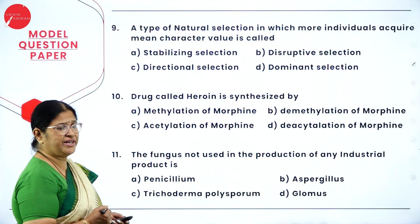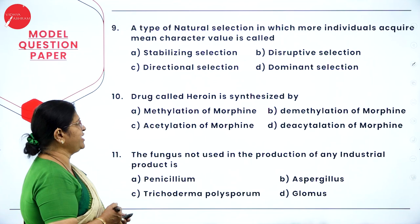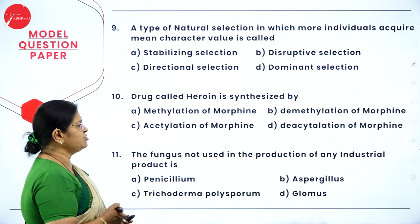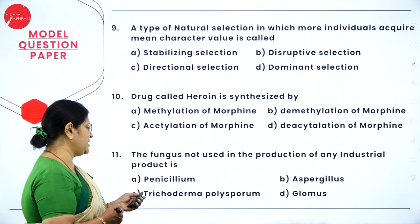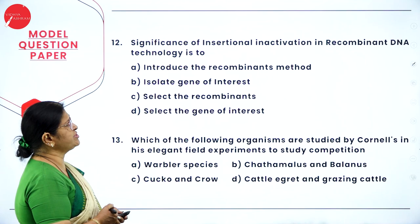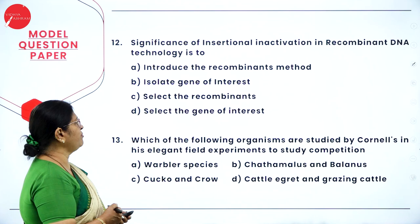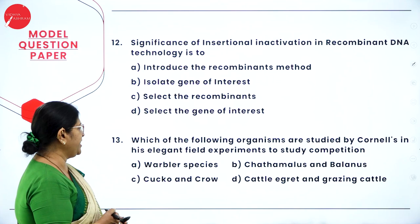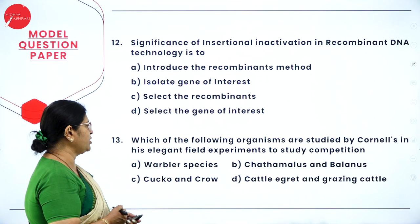Question 10: drug heroin is synthesized by — A: methylation of morphine; B: demethylation; C: acetylation of morphine; D: deacetylation. Question 11: the fungus not used in production of any industrial product is — A: Penicillium; B: Aspergillus; C: Trichoderma polysporum; D: Glomus. Question 12: significance of insertional inactivation in recombinant DNA technology is to — A: introduce recombinants; B: isolate gene of interest; C: select the recombinants; D: select the gene of interest. Question 13: organisms studied by Connell in his field experiment to study competition — A: warbler species; B: Chthamalus and Balanus; C: cuckoo and crow; D: cattle egret and grazing cattle.